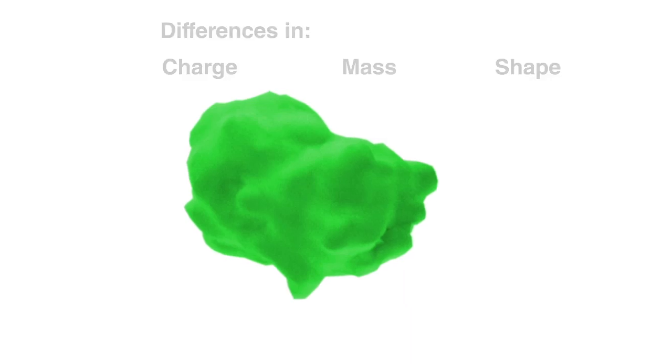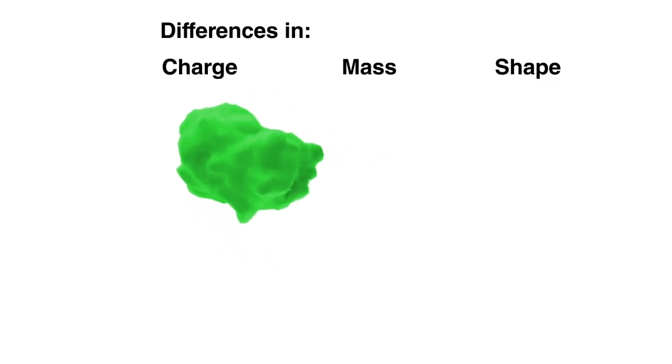In non-denaturing or native PAGE, proteins retain their native, folded state and separate in the gel matrix according to their native net charge, mass, and shape.